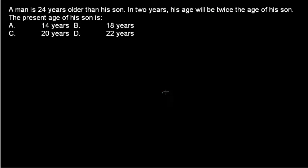Let's solve this question. Like all age-related problems, this is very relatable and basic. A man is 24 years older than his son. In two years, his age will be twice the age of his son. That's the question. In all these age-related problems, the first thing to ask yourself is: what assumption do we need to make?